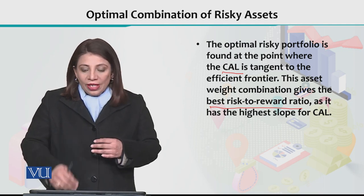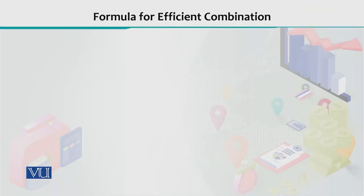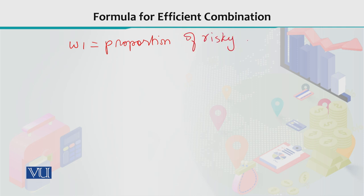If we want to calculate this using a formula — suppose W1 is the proportion of risky asset one, and W2 is the proportion of risky asset two.